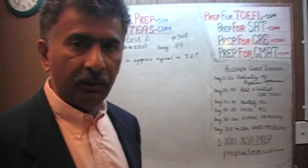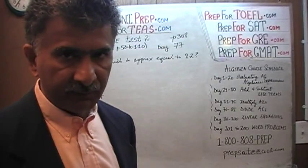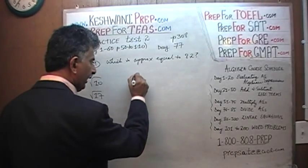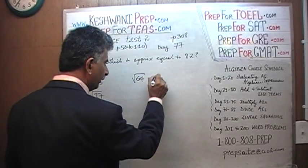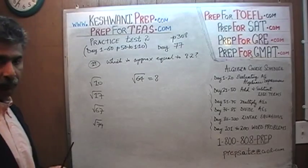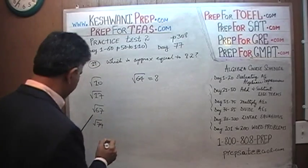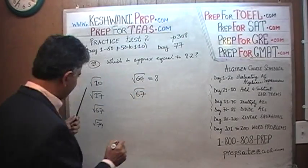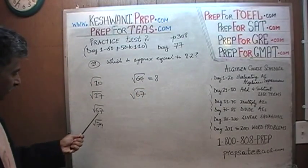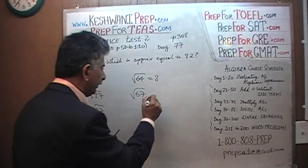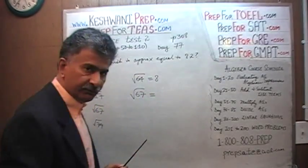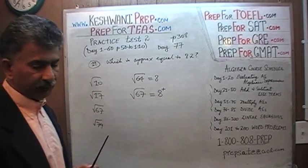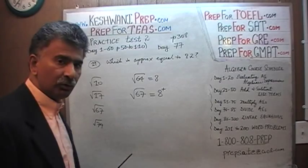We are going to look at them one by one purely for learning purposes. But as far as the exam is concerned, all you have to realize is that the square root of 64 is 8. Therefore, the square root of 67 is the one that comes closest to 8.2 — it is going to be just a little bit more than 8. The answer is the square root of 67.